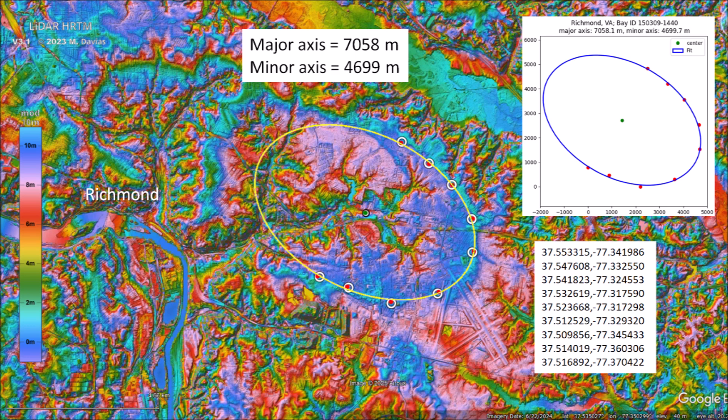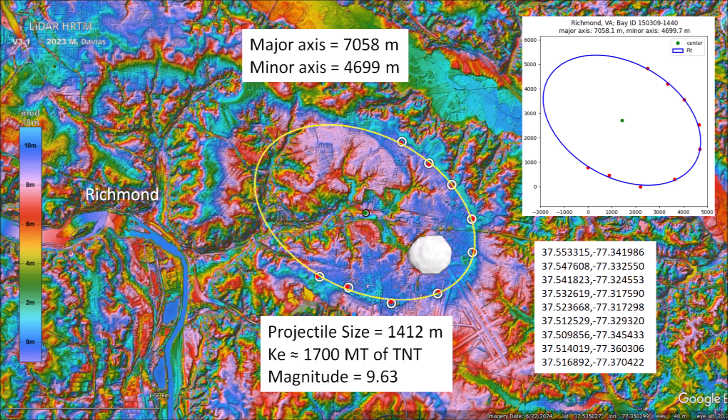This is a huge Carolina Bay with an azimuth converging on Lake Michigan. Assuming that this Carolina Bay was made by the impact of a glacier ice boulder as proposed by the Glacier Ice Impact Hypothesis, it had more than enough energy to liquefy saturated soil and to fluidize gravel beds around Richmond. Using GILD equations that correlate crater size to projectile diameter, the ice boulder that made this basin had a diameter of 1,412 meters and a kinetic energy equivalent to 1,700 megatons of TNT. The impact would have generated seismic vibrations of magnitude 9.63.